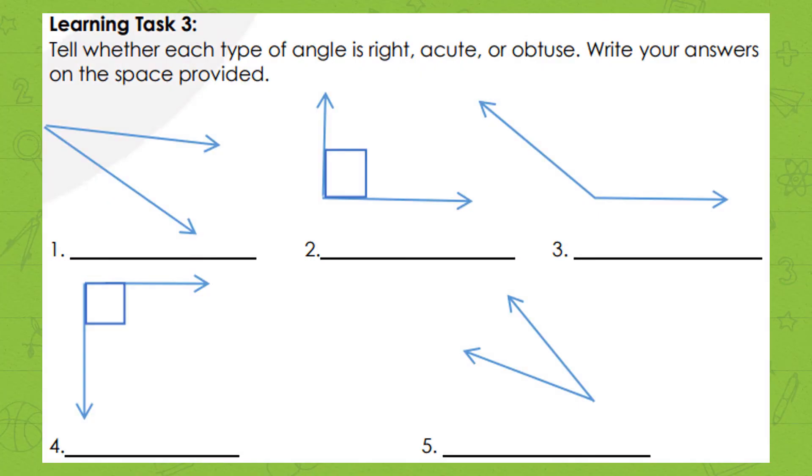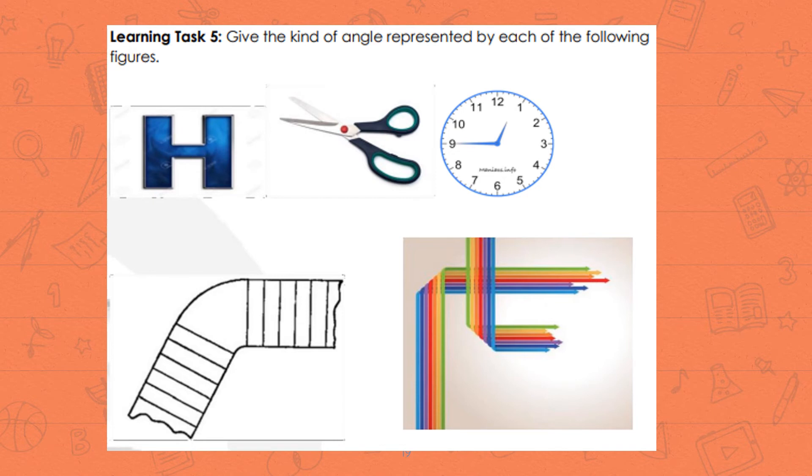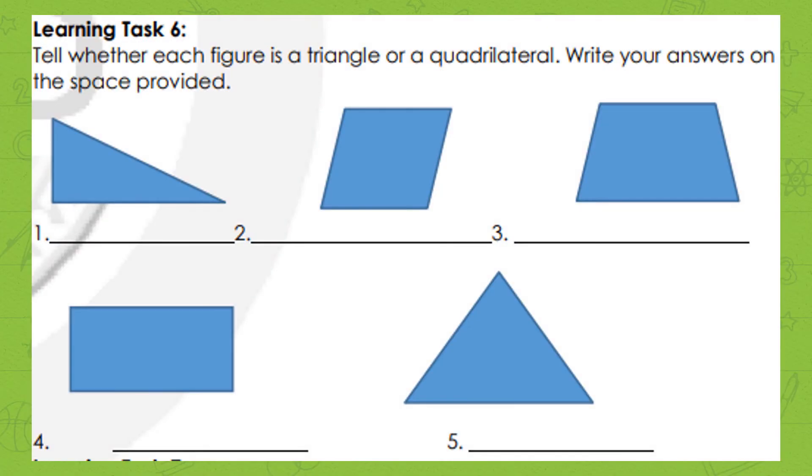Learning task 3: Tell whether each type of angle is right, acute, or obtuse. Learning task 4: Draw the following angles and name them. Learning task 5: Give the kind of angle represented by each figure. Learning task 6: Tell whether each figure is a triangle or a quadrilateral. Write your answers on the space provided.